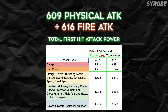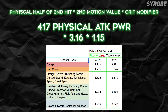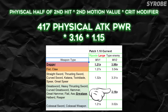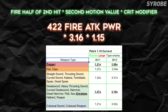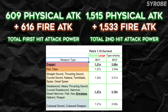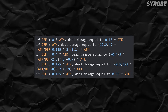For the second hit, we do this pretty much the same. We use the same 417 physical damage and multiply it with the same crit modifier, but this time change the motion value to the second motion value multiplier, and then repeat the same process using the 422 fire damage for the second hit's motion value. Now, don't add any of this together just yet, because we still need to factor in the defensive stats of our target, which is where the table with the conditions comes into play.